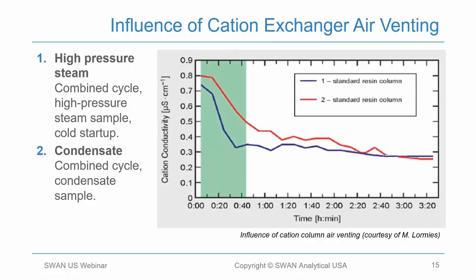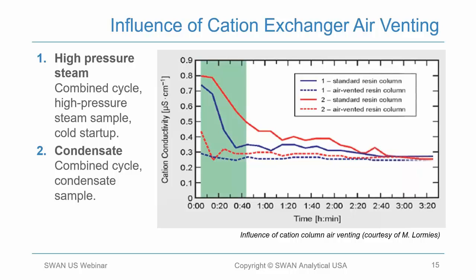This graph shows a comparison of cation exchangers — the traditional versus the vented. The conductivity measurement of high pressure steam of a combined cycle is shown in blue, and the condensate cation conductivity in red, measured after a traditional cation exchanger. The next set shows the exact same samples where the cation conductivity is measured utilizing a vented cation exchanger, and you can see a tremendous difference, particularly initially.